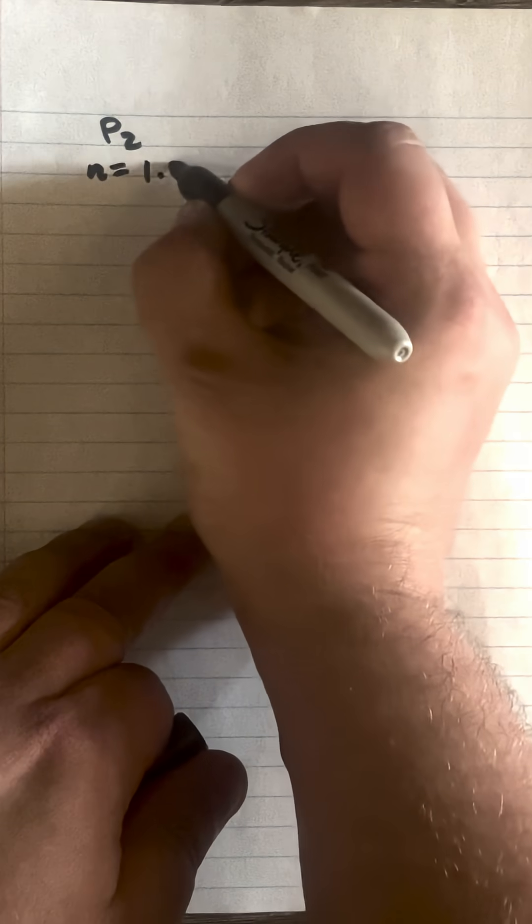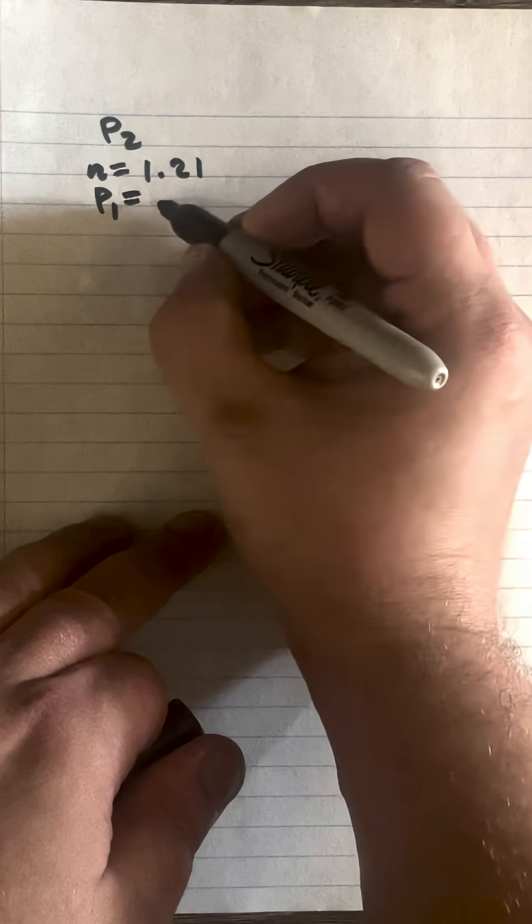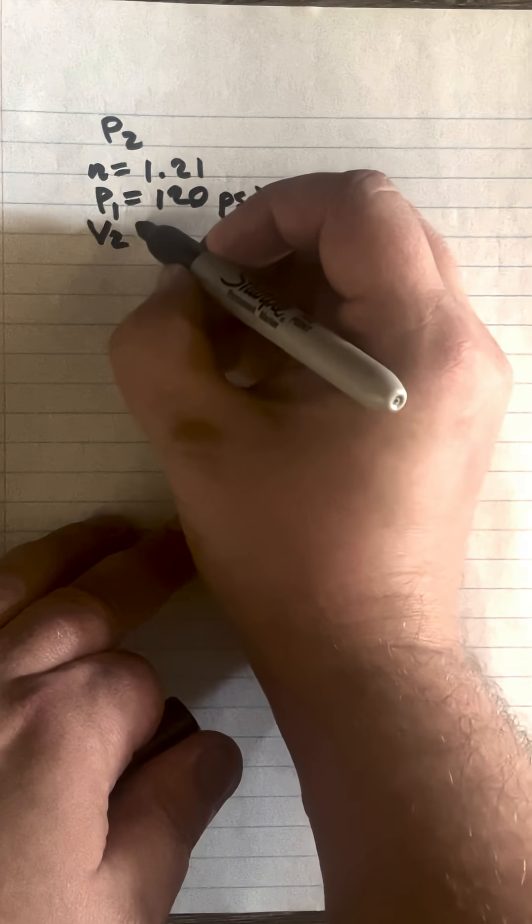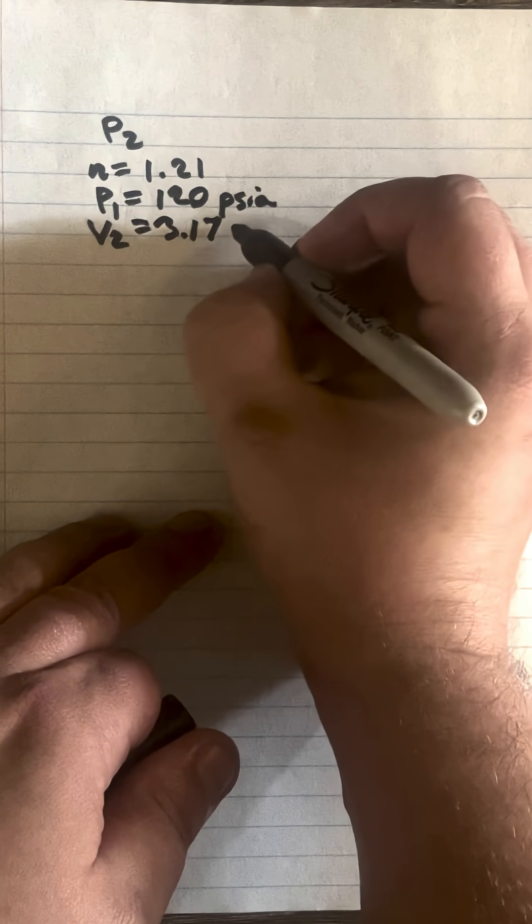So for a polytropic process, we're going to solve for P2 and we're going to assume N is 1.21, P1 is 120 PSIA, V2 is 3.17 V1.